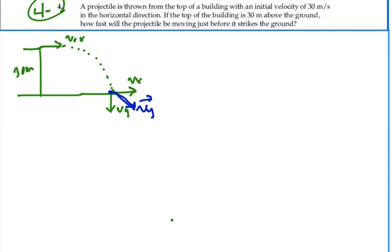We have two independent motions happening simultaneously. If we write down what we know, our initial velocity in the x direction is 30 meters per second and that will be constant all the way through. Our initial velocity in the y direction is zero. We are just basically falling.